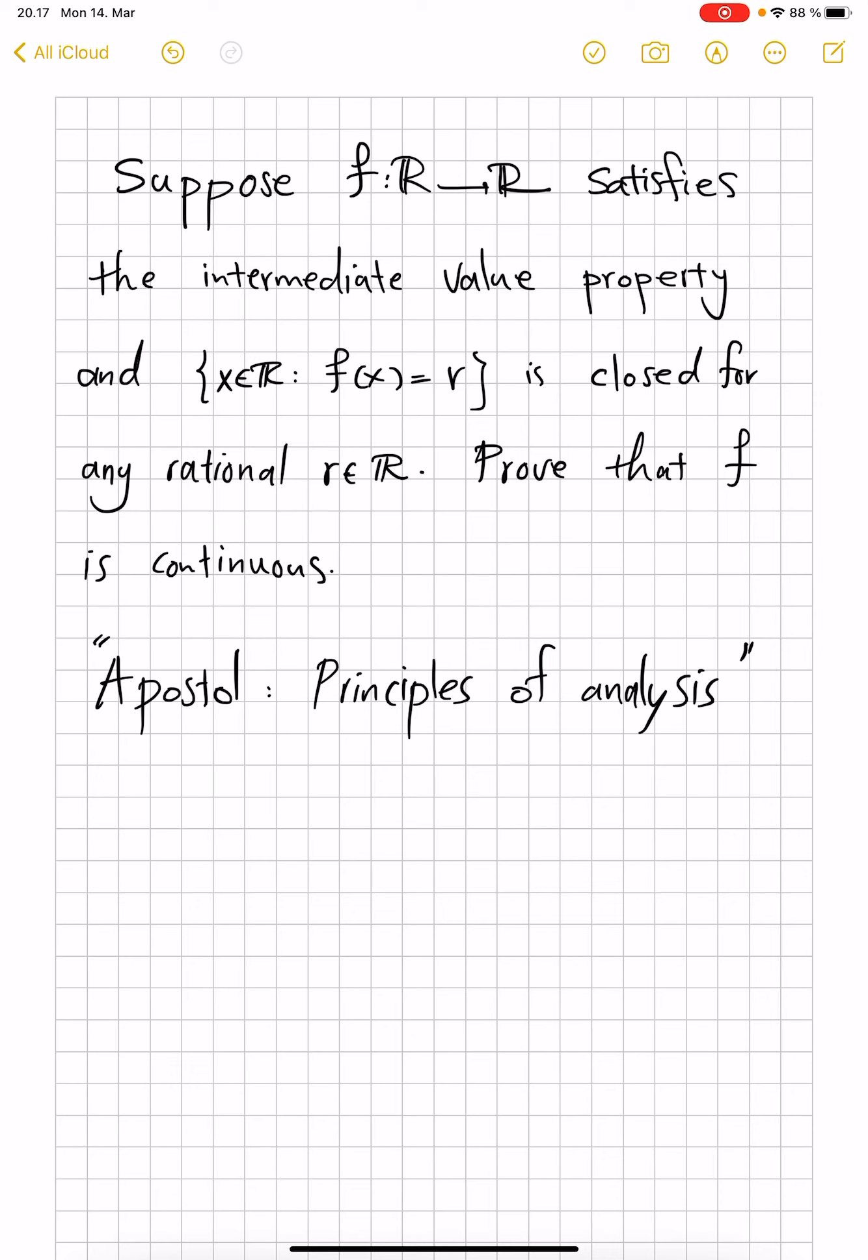We know that if f is a continuous function, then it satisfies the intermediate value property. That's how you prove a function has zeros, if it's positive at some point and negative at another. We also know that the preimages of closed sets are closed, just by definition of continuity.